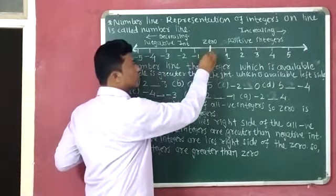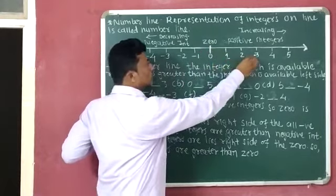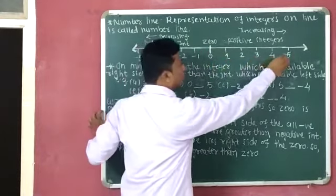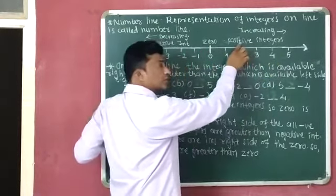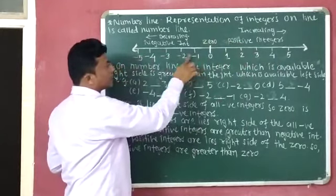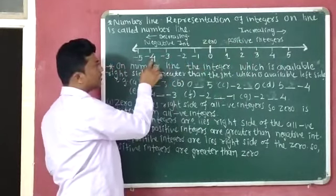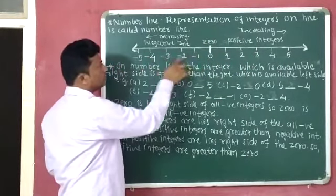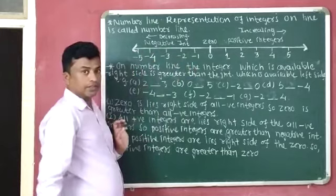This is zero. Then one, two, three, four, five — these are positive integers. And minus one, minus two, minus three, minus four, minus five — these are negative integers.